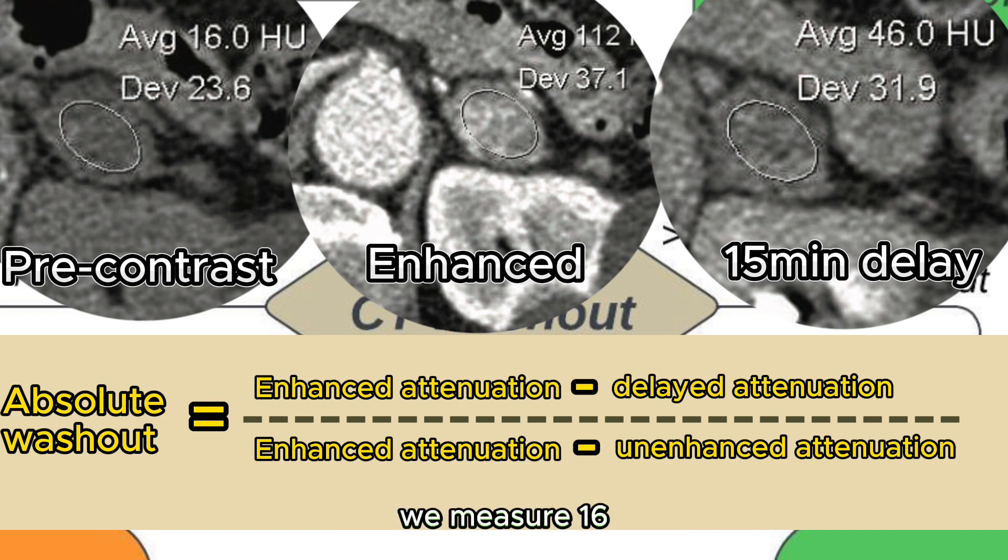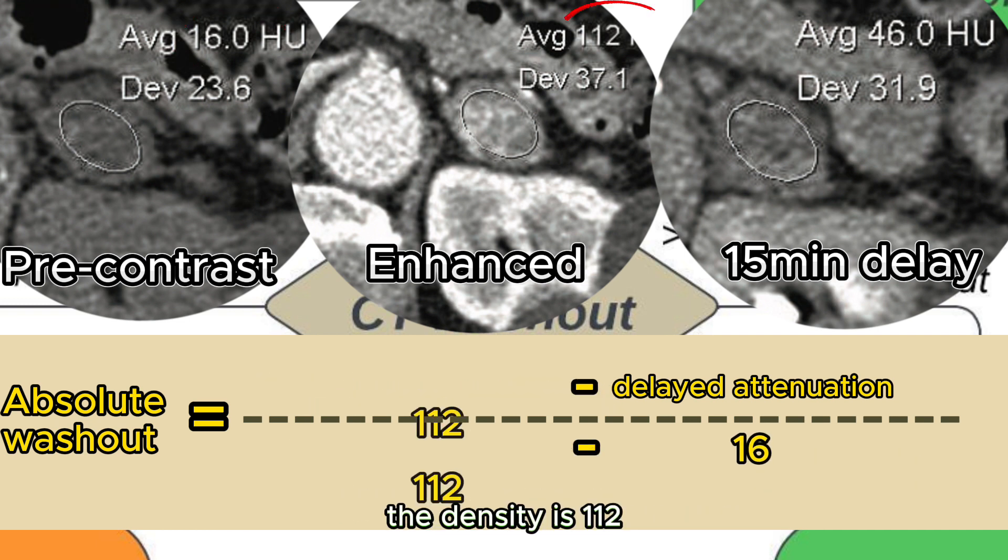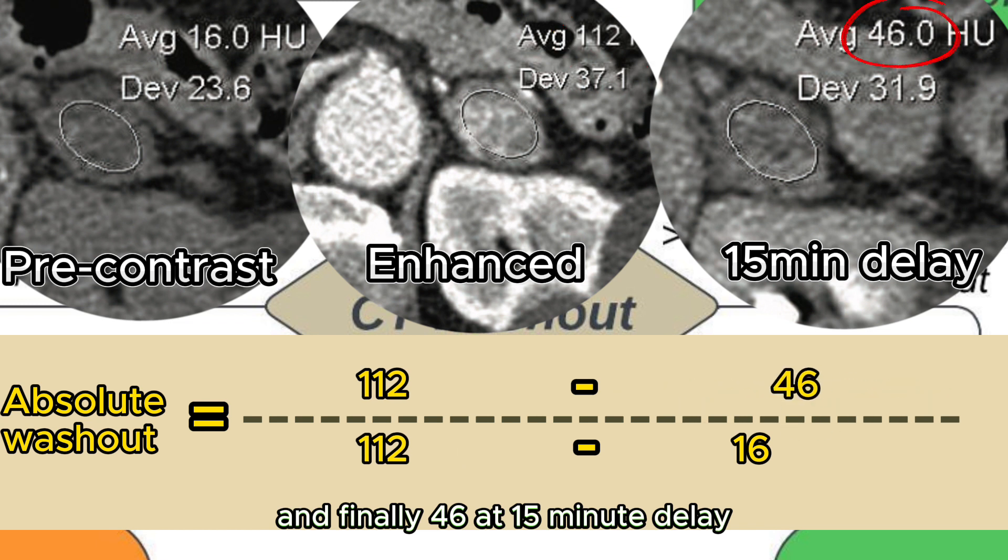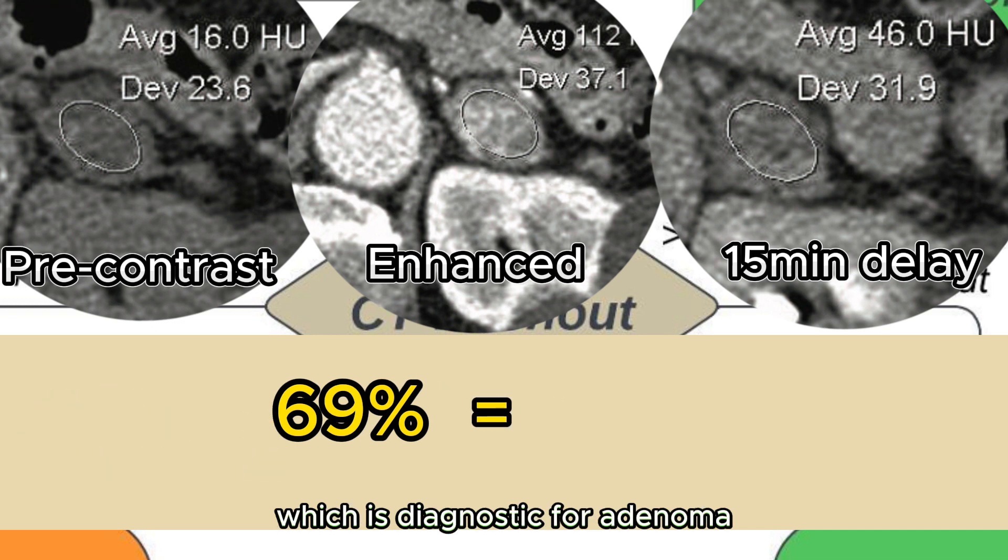Before contrast giving, we measure 16, during portal venous phase the density is 112, and finally 46 at 15 minute delay. This gives us a 69% washout, which is diagnostic for adenoma.